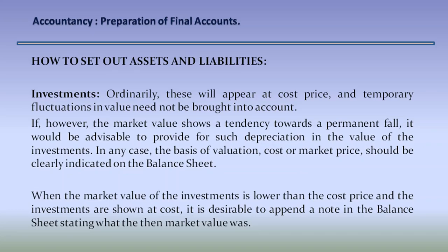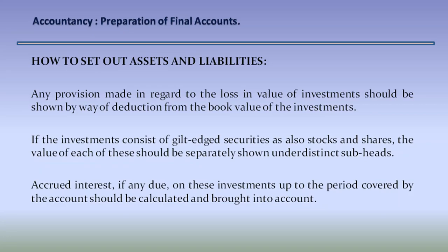Investments: ordinarily these will appear at cost price and temporary fluctuations in value need not be brought into account. If however the market value shows a tendency towards a permanent fall, it would be advisable to provide for such depreciation in the value of the investments. In any case, the basis of valuation — cost or market price — should be clearly indicated on the balance sheet. When market value is lower than cost, it is desirable to note the current market value. Any provision for loss in value of investments should be shown by way of deduction from the book value. If investments consist of gilt-edged securities as also stocks and shares, the value of each should be separately shown under distinct sub-heads. Accrued interest due on investments up to the period covered by the account should be calculated and brought into account.